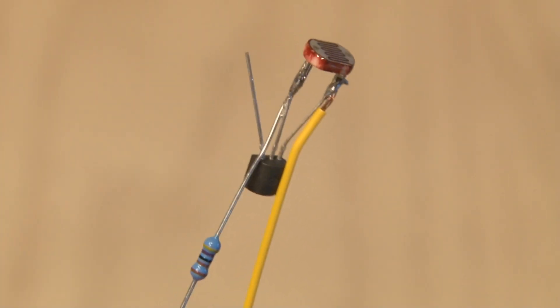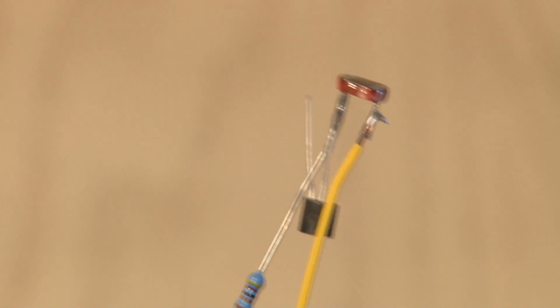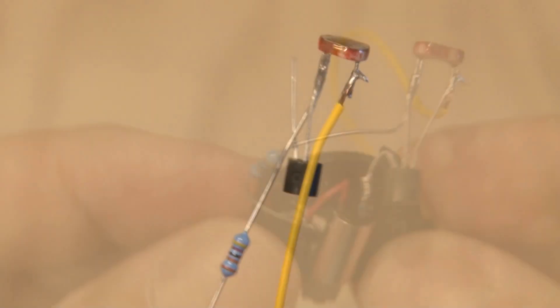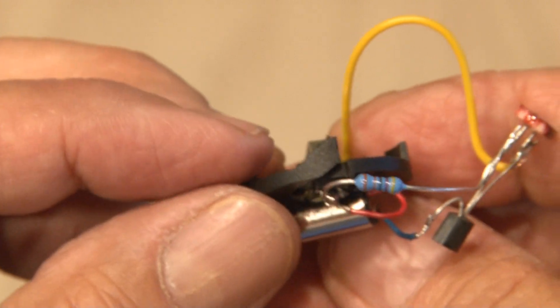I've made my three solder connections with the positive wire, the transistor, photoresistor and resistor. And made the remaining two connections on the battery holder.